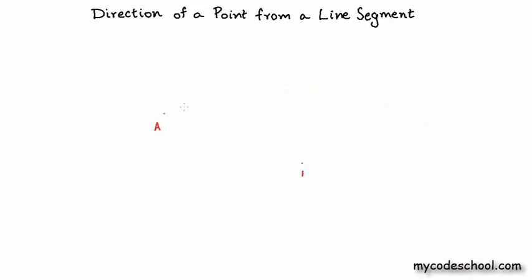We have two points A and B representing the line segment AB, and a third point P, and we need to tell whether P is to the left or right of AB. In order to do that, we first need a mathematical representation for points A, B, and P, so we choose a coordinate system. For most two-dimensional problems — and this is a two-dimensional problem — choosing the Cartesian plane as the coordinate system is a natural and good choice.